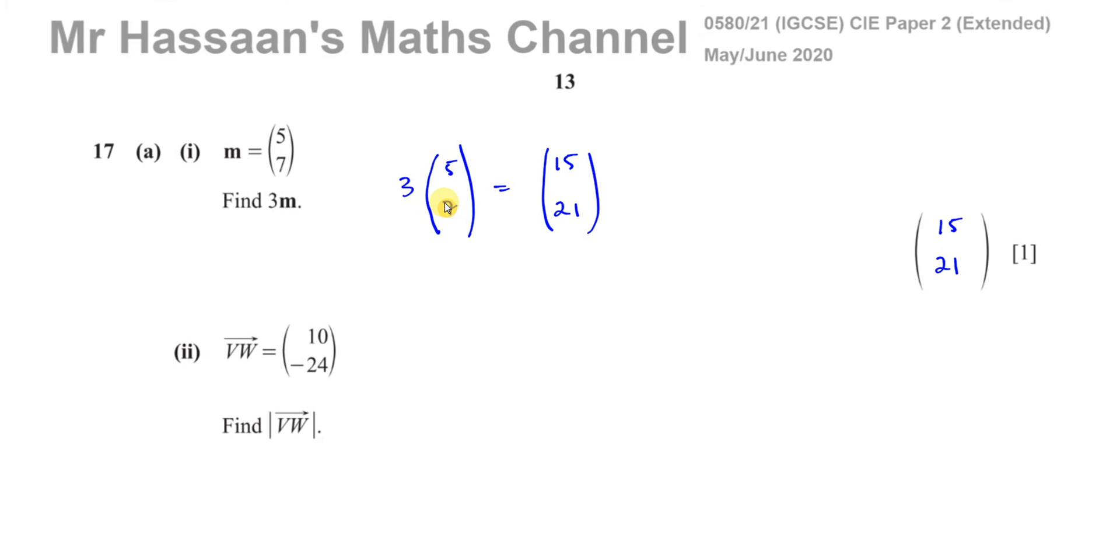Then it says VW is (10, -24), find this. What this means, the magnitude of this vector means the length of the line. So this vector VW actually looks something like this, you go 10 units to the right and you go 24 units down, so the actual vector will look something, a sketch of it would be something like this.